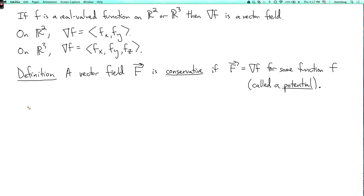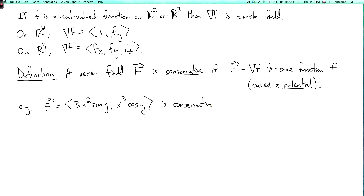So some vector fields are conservative and some are not. For example, let's look at the vector field in two dimensions: (3x² sin y, x³ cos y). Is this conservative? Is there a function little f such that f_x is 3x² sin y and f_y is x³ cos y? Well, maybe you can guess one. Yes — so this is conservative. This vector field F is the gradient of little f where little f equals x³ sin y. So here, just by guessing and checking, we find a potential.